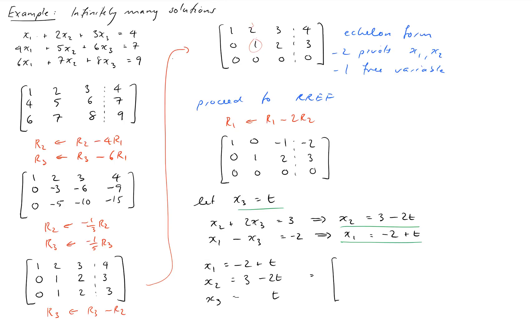And we can also write them down in vector form. That becomes x1, x2, x3 equals the constant terms negative 2, 3, and 0 plus t times 1, negative 2, and 1. And that is our general solution to the system of equations. It has infinitely many solutions because of the presence of a free variable, and it's consistent. We didn't get any rows of equations saying zero equals one or something like that, so we're done.